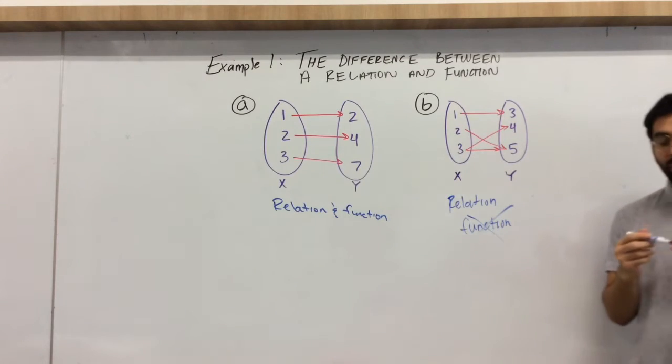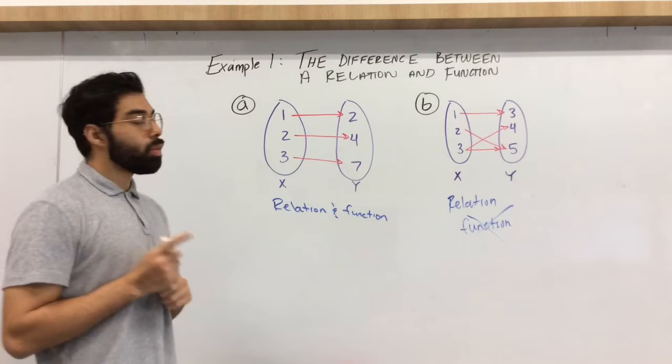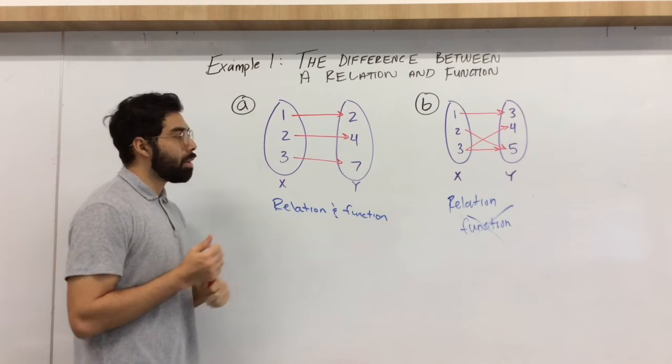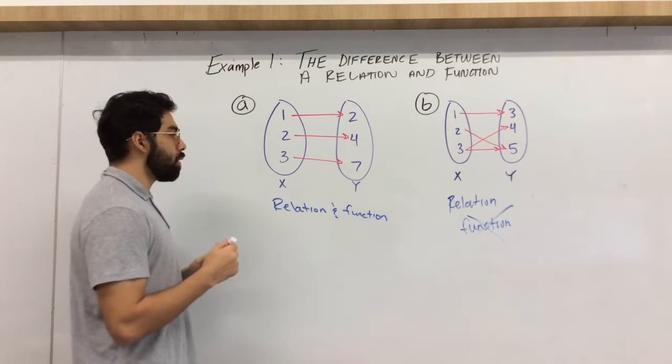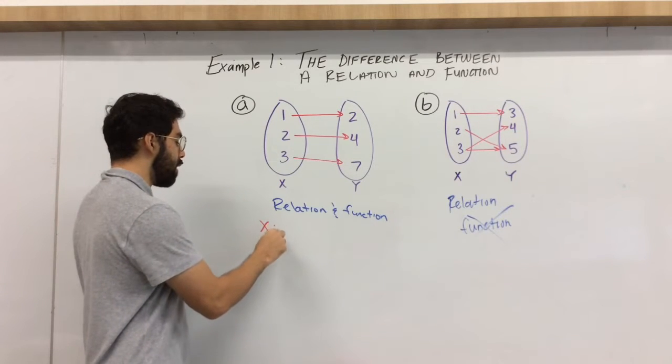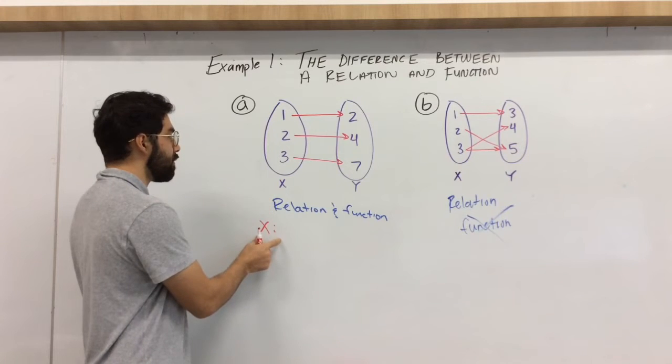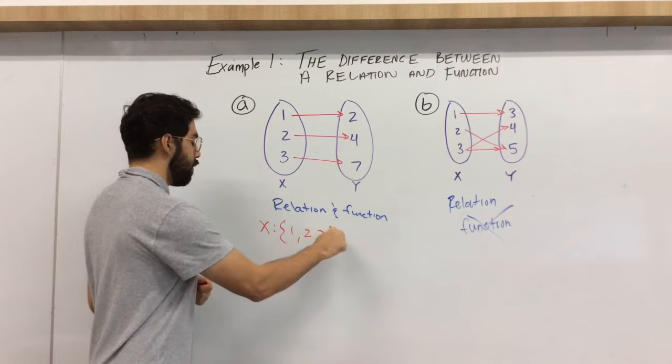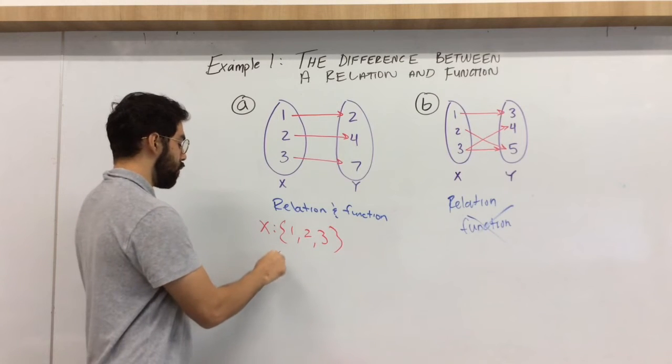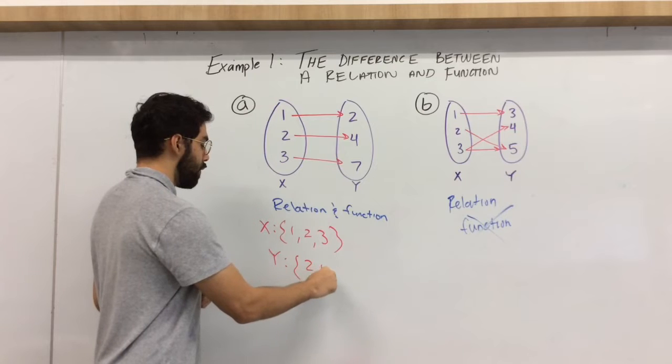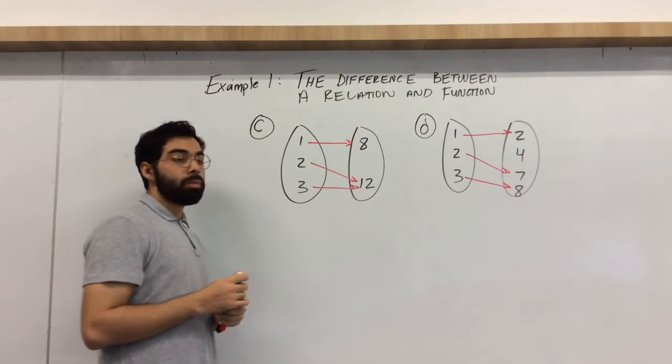Okay, so we'll go over two more examples like this. Also, one thing I did want to add, this map can be represented as a set as well, which you'll see quite often. So what I mean by that is we have our set of x values would be 1, 2, and 3, and our set of y values in this case would be 2, 4, and 7.